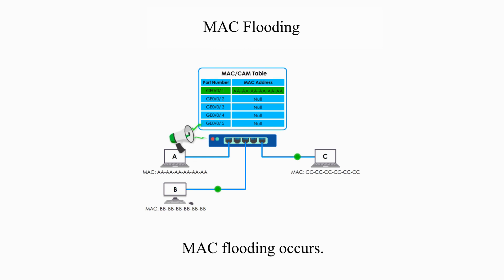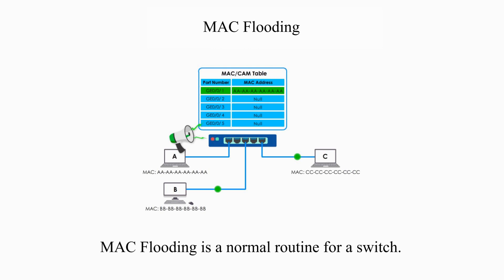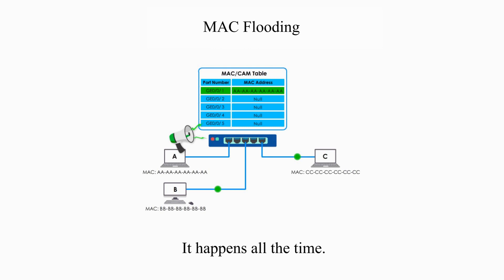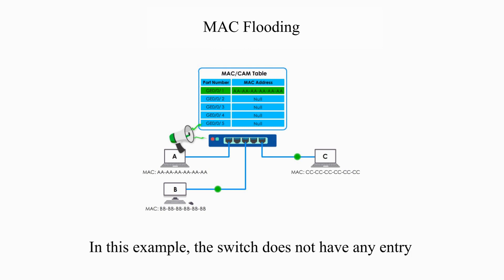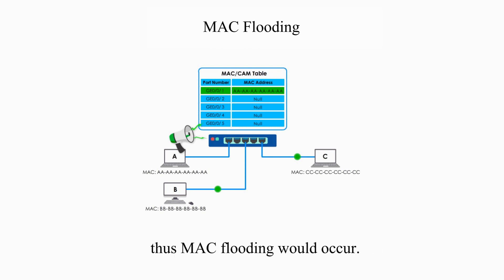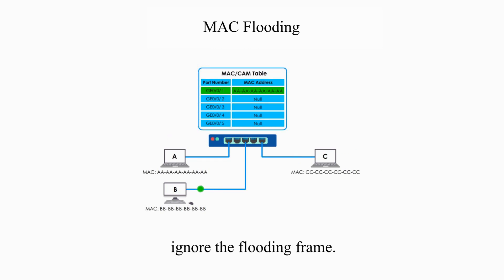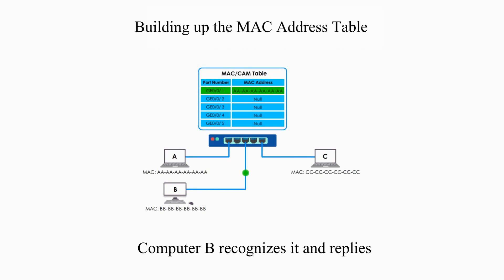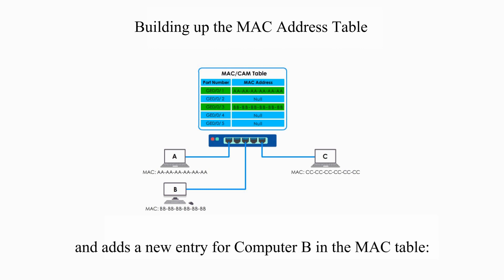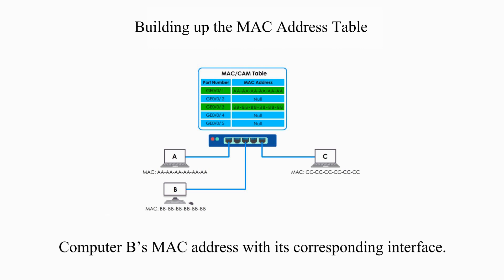MAC flooding occurs — it is a normal routine for a switch and happens all the time. In this example, the switch does not have any entry for Computer B in its MAC address table, so MAC flooding would occur. Other devices such as Computer C ignore the flooding frame. Computer B recognizes it, replies, and the switch reads Computer B's frame and adds a new entry for Computer B in its MAC address table — Computer B's MAC address with its corresponding interface.